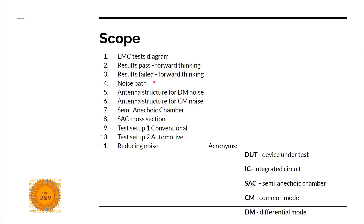After this we will see a noise path. This will be the same graph as in the conducted emission part one, but we will discuss how the noise is radiating. Then we will see antenna structure for differential mode noise and antenna structure for common mode noise. These structures are created in our device not intentionally, and because we have them, the device has unintentional emission.